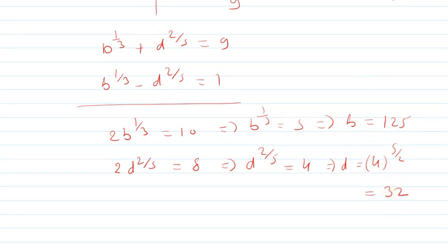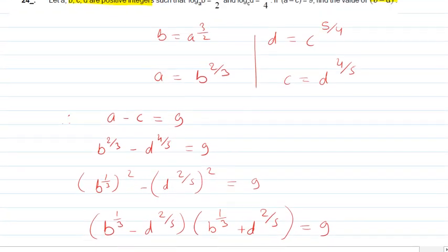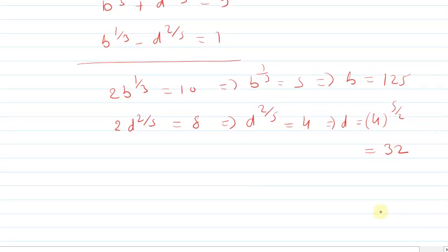Okay, what have you asked? Find the value of b minus d. So therefore, the answer is b minus d. How much is b? 125. And how much is d? 32. So it will be 93. 93 is the answer.